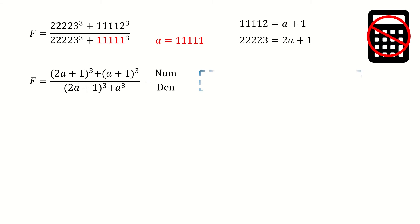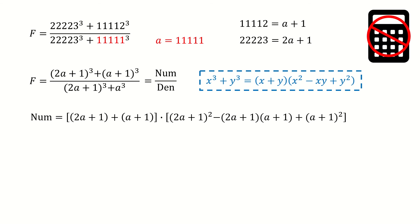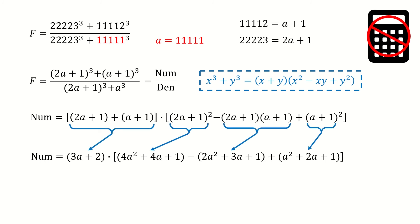Here we will apply a trick by using the formula for the sum of cubes. So for the numerator, we can write it in this way by using this formula. And next we expand it, so we got here. The first term goes to here, and the second term goes to here after expansion.